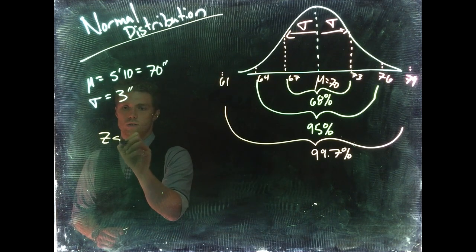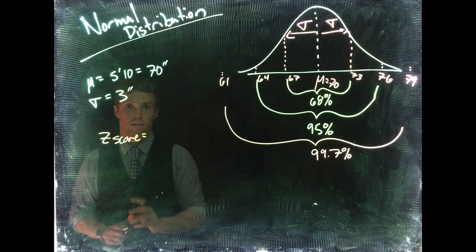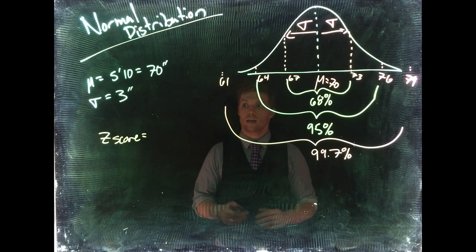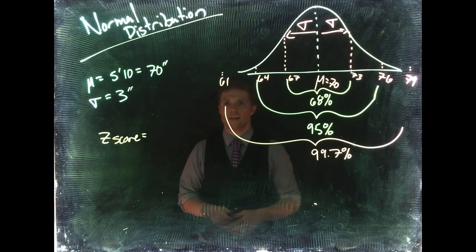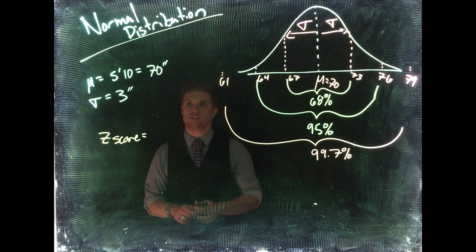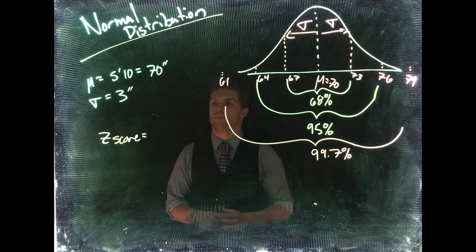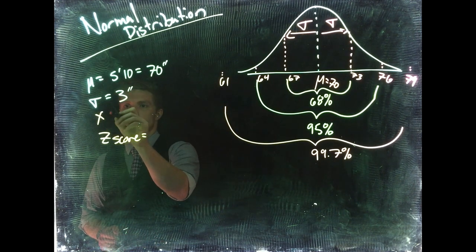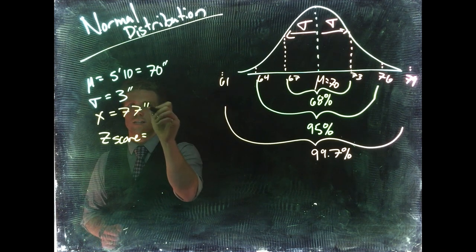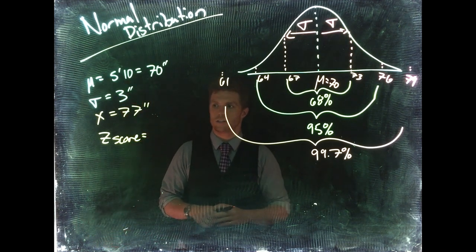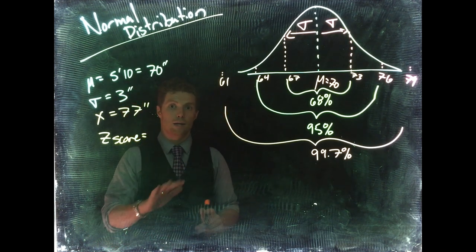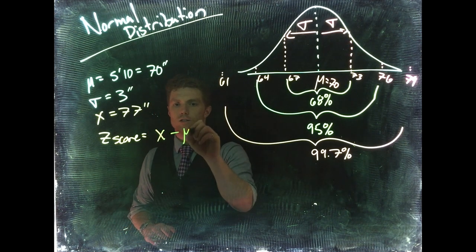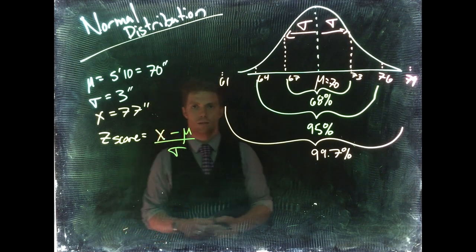In order to do that, we want to know what the z-score is. The z-score literally tells us how many standard deviations away from the mean we are and in what direction. So let's take somebody who's like 6 feet 5 inches—so they would be 77 inches. So that would be our measurement: x equals 77 inches. And we want to know how strange an occurrence that is.